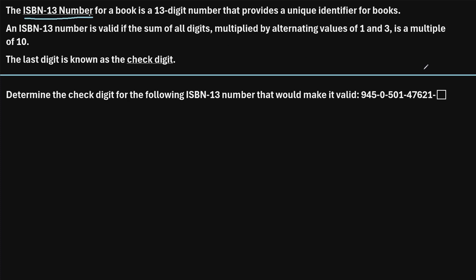The ISBN 13 number for a book is a 13-digit number that provides a unique identifier for books. Now, we say that an ISBN 13 number is valid if the sum of all digits multiplied by alternating values of 1 and 3 is a multiple of 10. And the very last digit in the ISBN 13 number is known as the check digit.